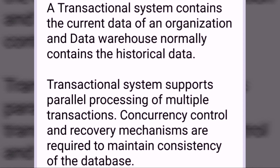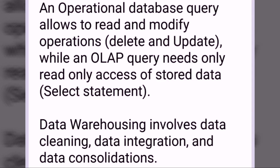A transactional system contains the current data of an organization, while a data warehouse normally contains the historical data. Transactional systems support parallel processing of multiple transactions, and concurrency control and recovery mechanisms are required to maintain consistency. An operational database query allows read and modify operations like delete and update, while an OLAP query needs only read-only access of stored data with a select statement.